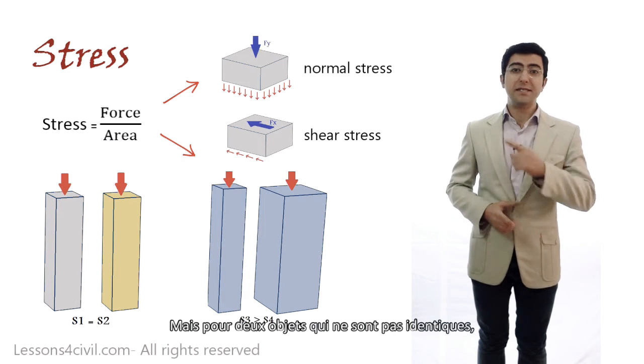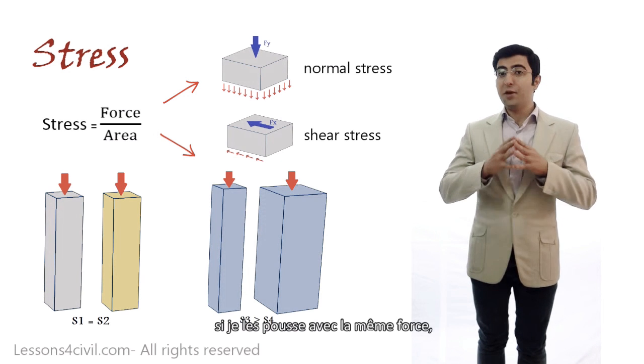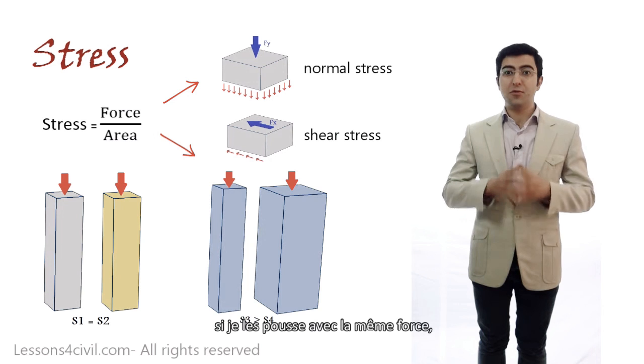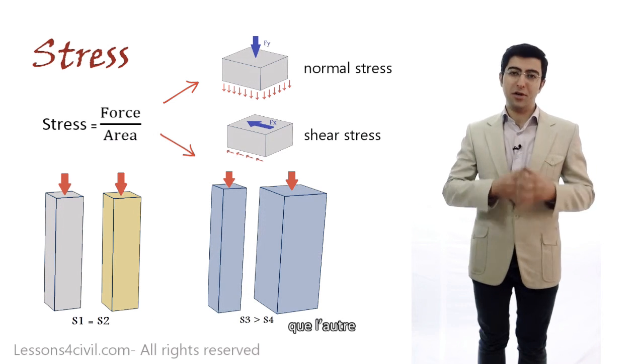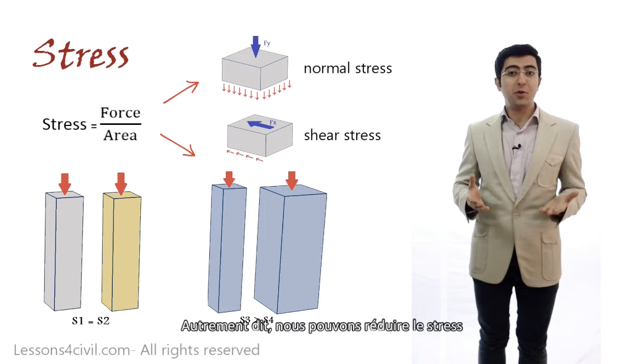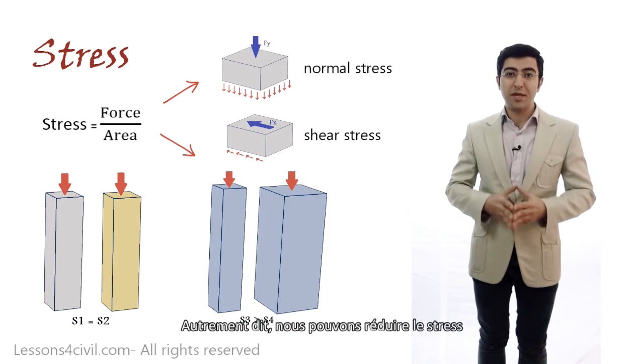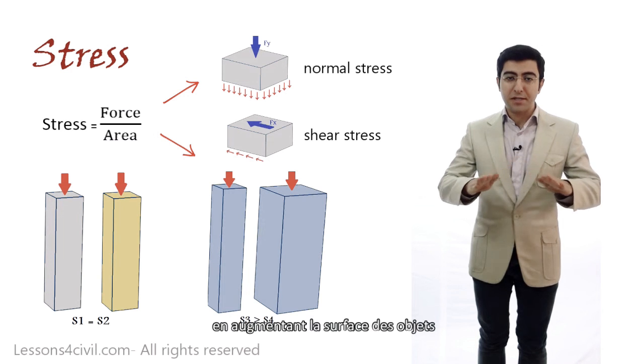So how about these dissimilar columns? If I push them down with the same amount of force, the column that has a larger cross section has a smaller stress than the others. In other words, we can reduce the amount of stress by increasing the cross section area.